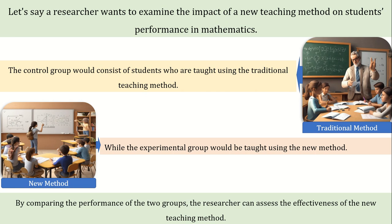As we talked earlier, the experimental group receives intervention. In this example, the experimental group is receiving intervention in terms of the new teaching method, while the control group is receiving no intervention here — it is going with the same conventional method.